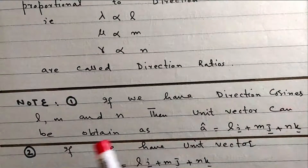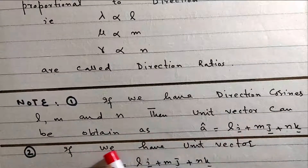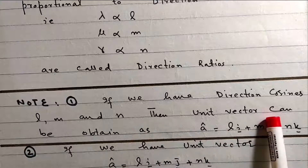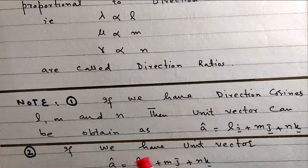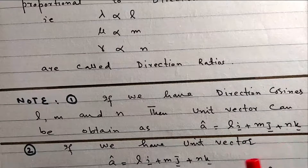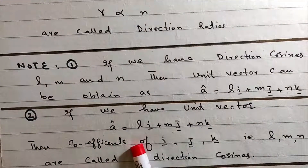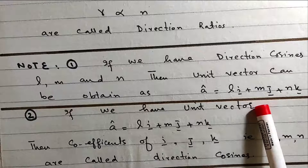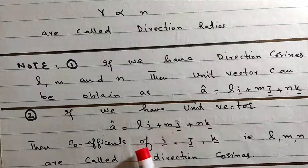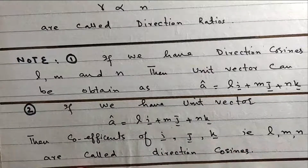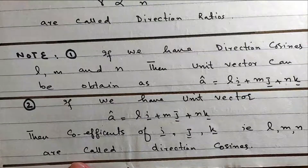If we have direction cosines L, M, N then the unit vector can be obtained as: a-cap = L·i + M·j + N·k. A unit vector has magnitude 1 because L² + M² + N² = 1. If we have a unit vector, the coefficients of i, j, k — that is L, M, N — are called direction cosines.